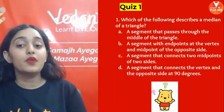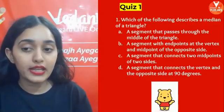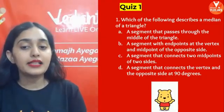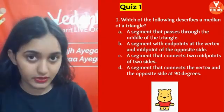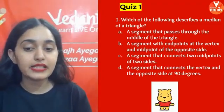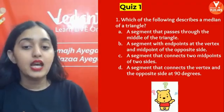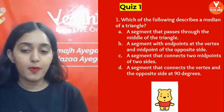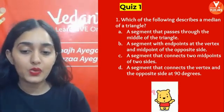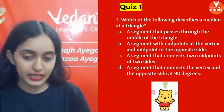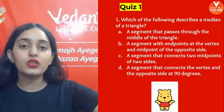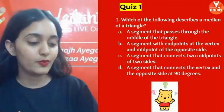Quiz question 1: Which of the following describes a median of a triangle? Options: A) a segment that passes through the middle of the triangle; B) a segment with endpoints at the vertex and the midpoint of the opposite side; C) the midpoint of the opposite side; D) a segment that connects two midpoints; E) a segment that connects the vertex and the opposite side at 90 degrees. You have 30 seconds.